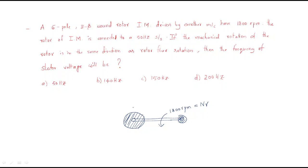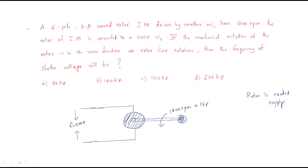The rotor of the induction motor is connected to a 50 Hz system — the rotor is excited by a supply of 50 Hz frequency. The mechanical rotation of the rotor is in the same direction as the rotor flux rotation, so the flux also rotates in the same direction. Then the frequency of the stator voltage needs to be found.